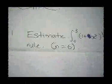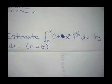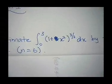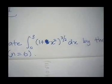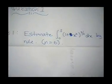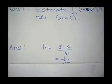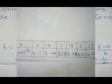Now we have discussed question 1 from tutorial 4. Estimate the integral from 0 to 3 of (1 plus x squared) to the power 3 over 2 dx by the trapezoidal rule. The first step, we have to find h. 3 minus 0 over 6 — we get h equals one half.